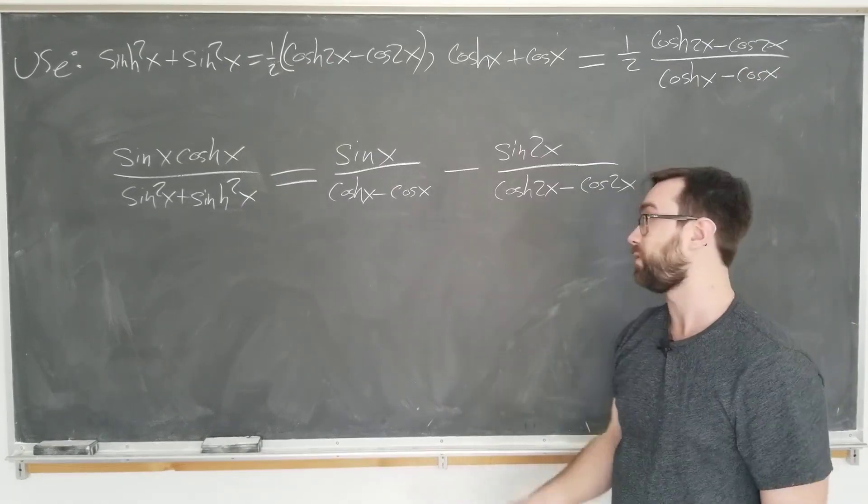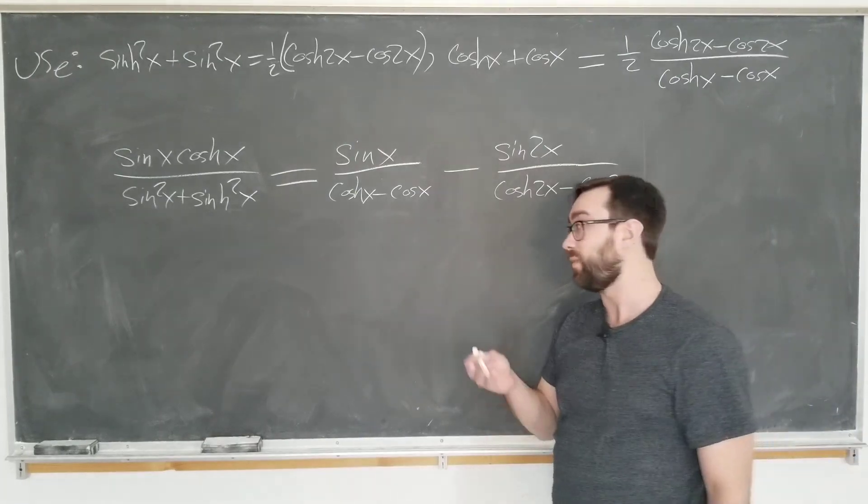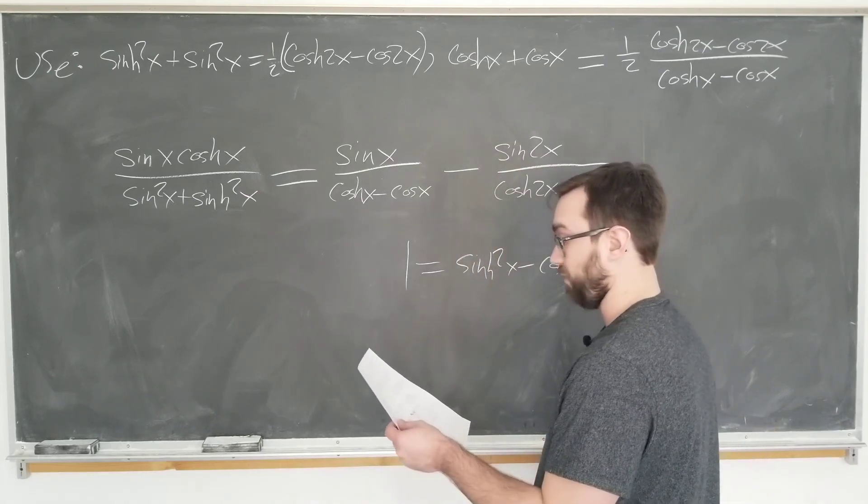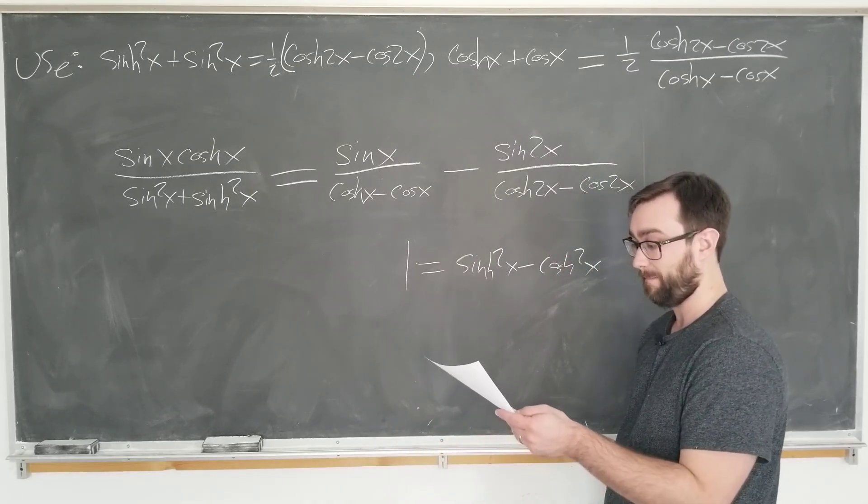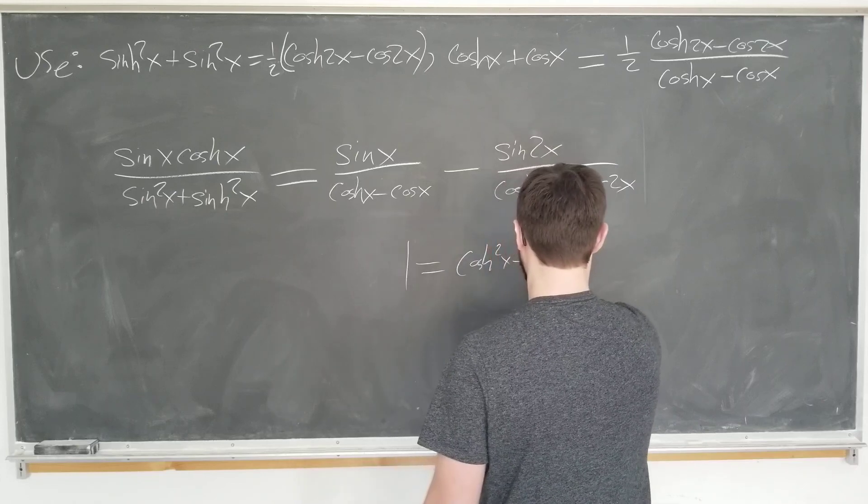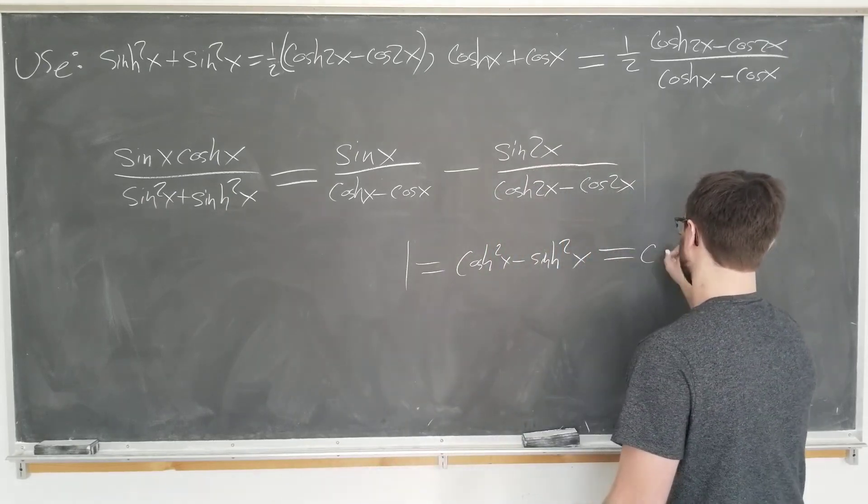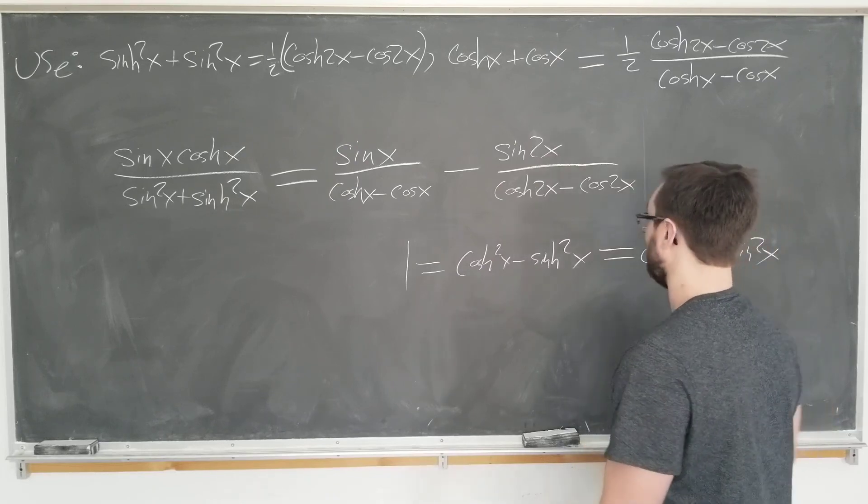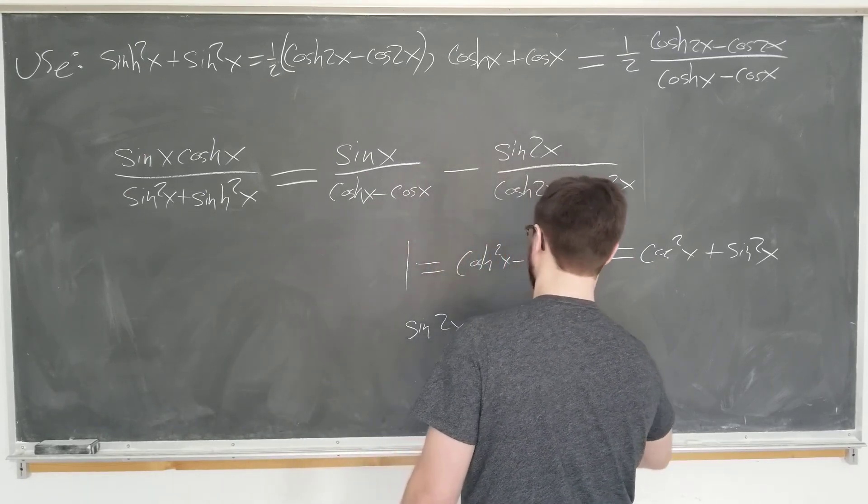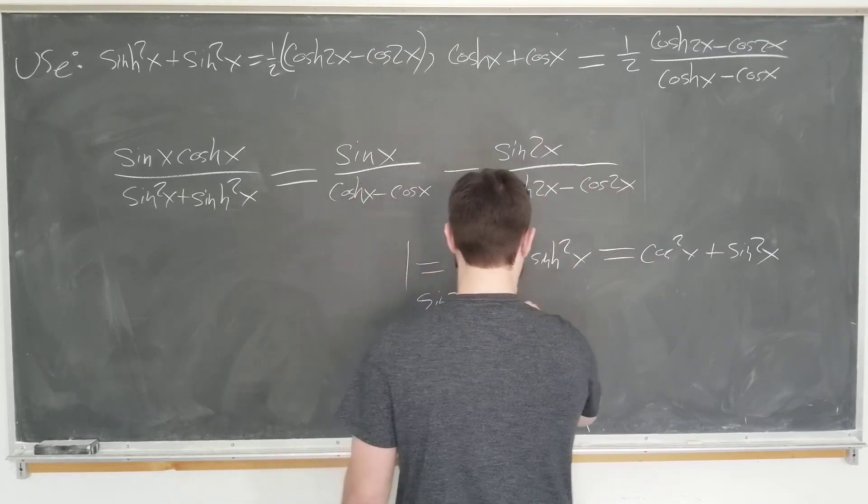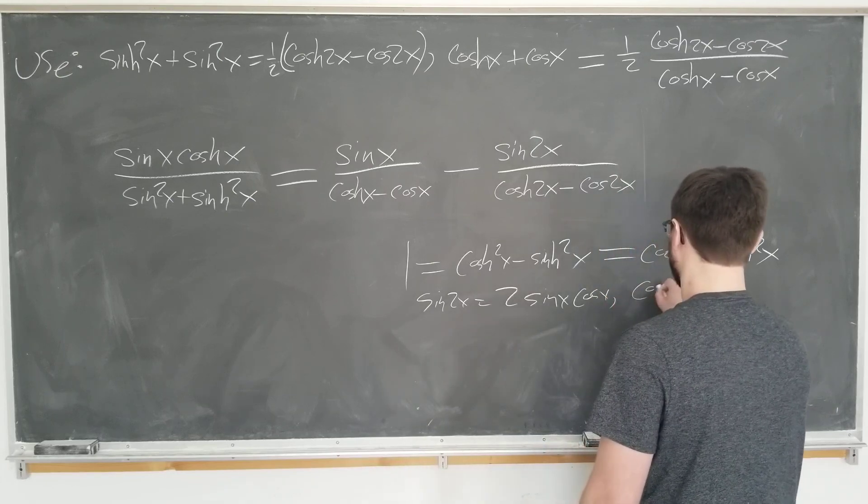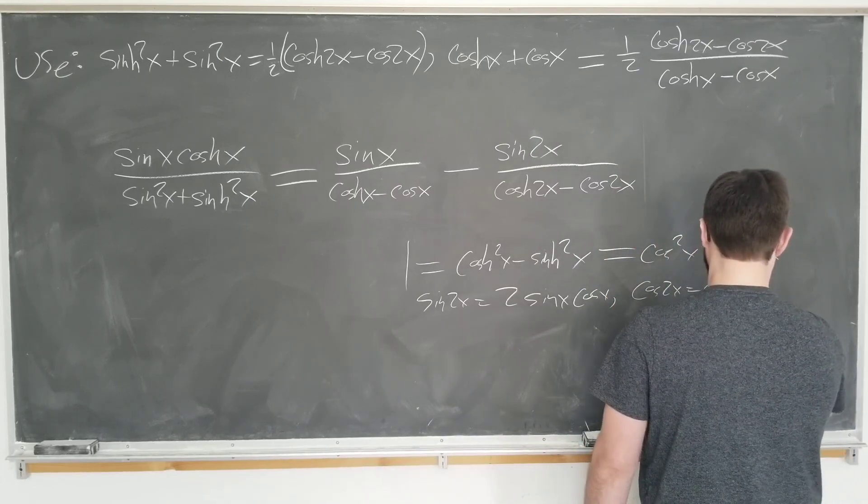Well, cosh 2x minus cos 2x over cosh x minus cos x. Well, how can I derive these identities, if you ask? Well, you just have to use things that everyone knows, basically. You have to use 1 is equal to sinh squared x minus cosh squared x. Or is it the other way around? That would be funny if I wrote the wrong one. Yeah, it is the other way around. Okay, here we go.